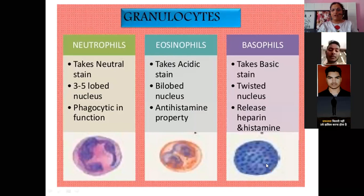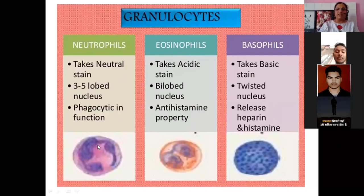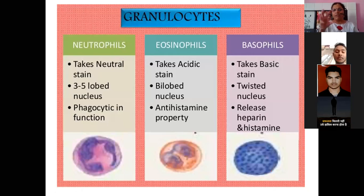Granulocytes contain granules — you can see the dots here representing granules. There are three types of granulocytes: neutrophils, eosinophils, and basophils. Neutrophils take neutral stain, which is how they get their name. Their nucleus is 3 to 5 lobed — meaning the nucleus has 3 to 5 lobes.